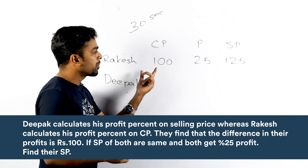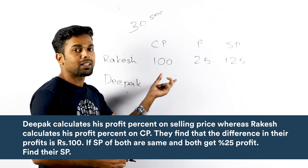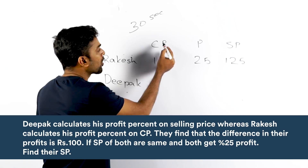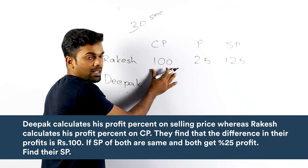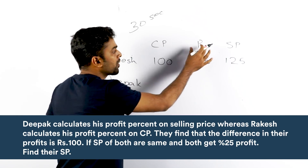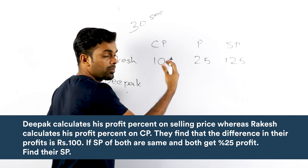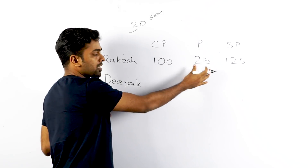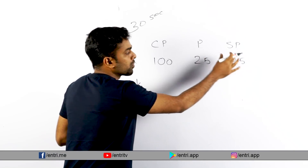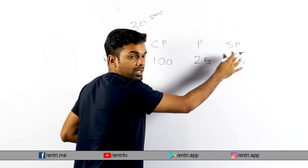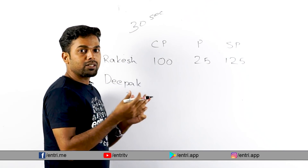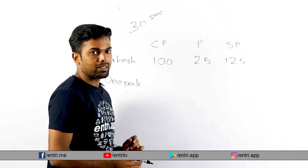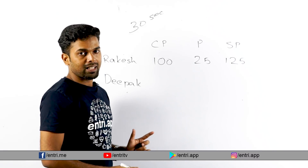Let's take the cost price of Rakesh as 100. The profit should be 25% of cost price, so profit = 25. The selling price of Rakesh is therefore 125.